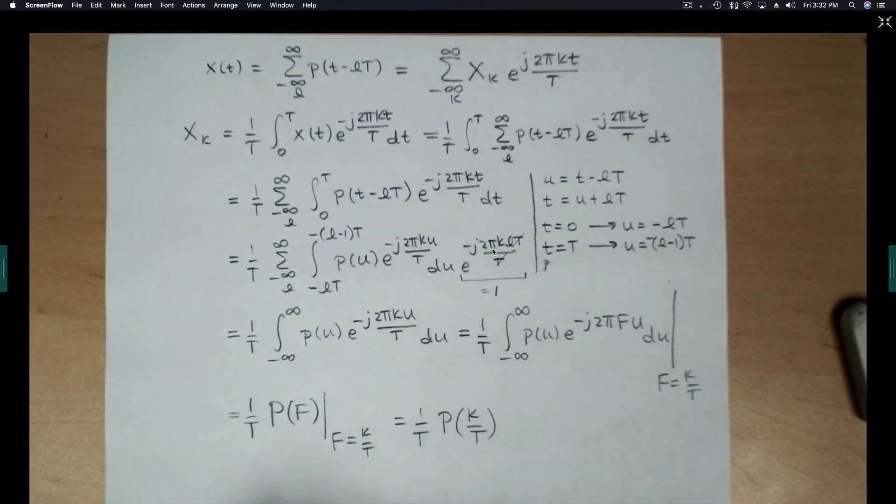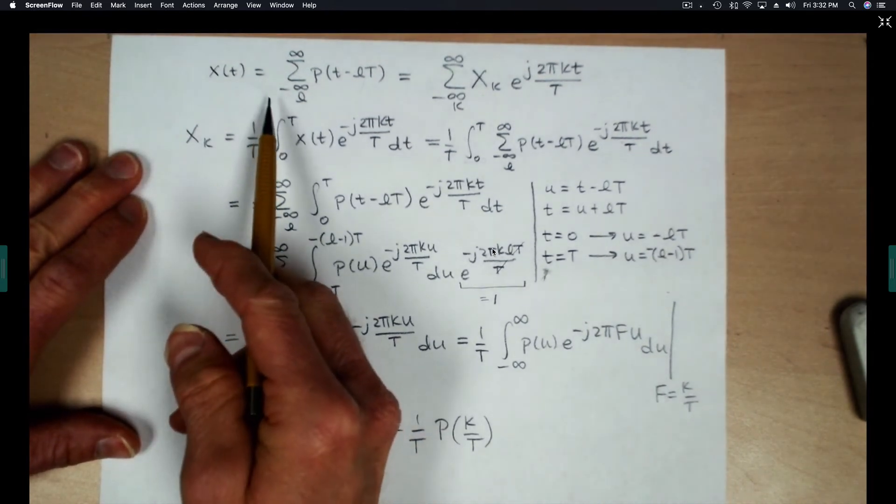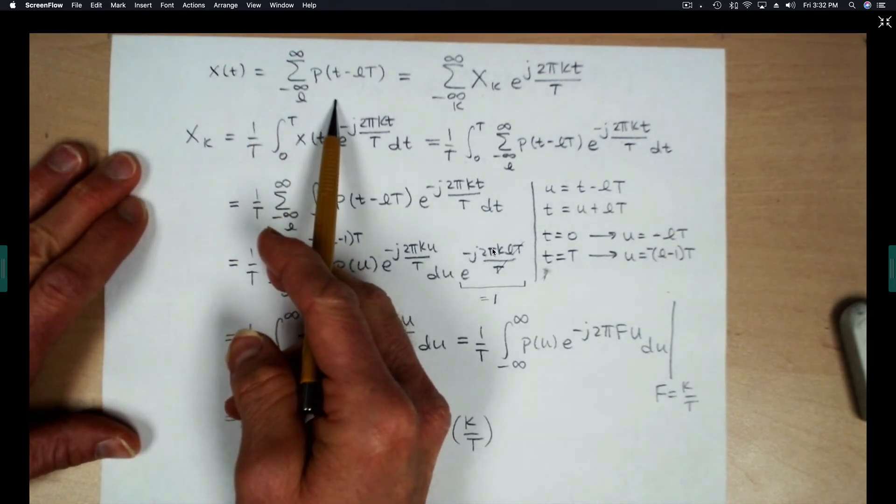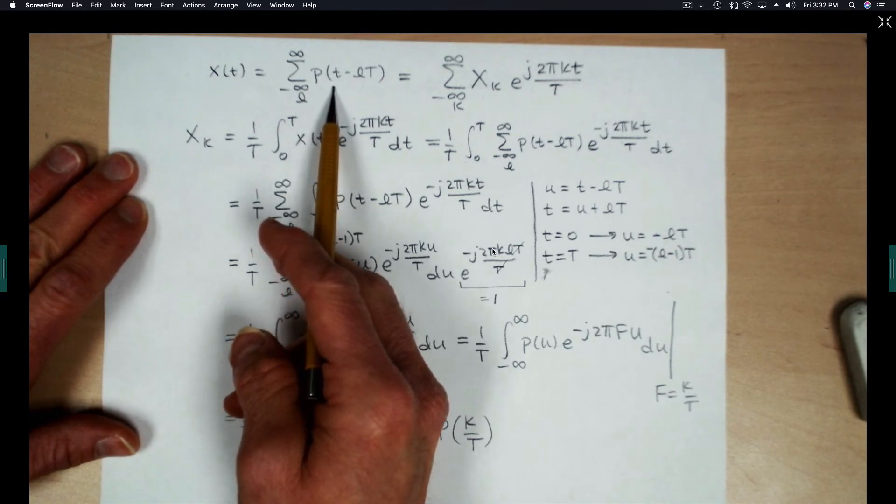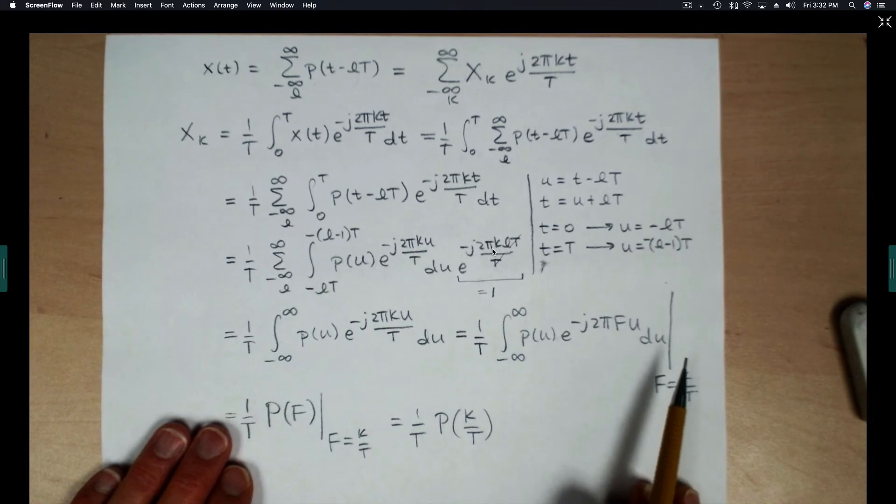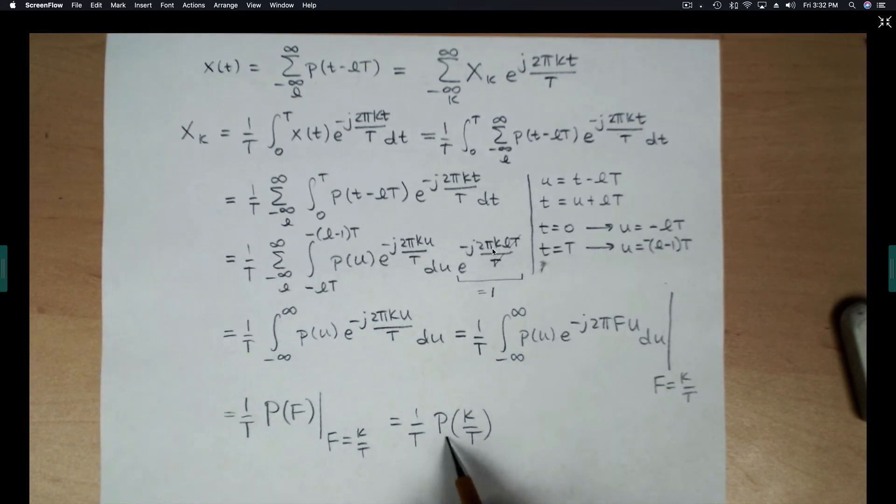What I find interesting about this example is that if the function that we start with is a periodic signal that is a pulse train defined in terms of the basic pulse P of T, then the Fourier series coefficients are essentially samples of the continuous time Fourier transform of that pulse.